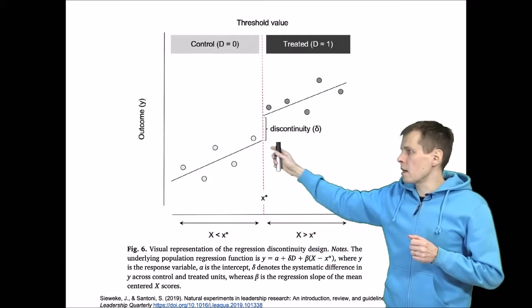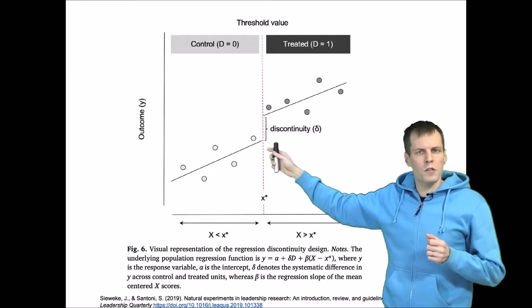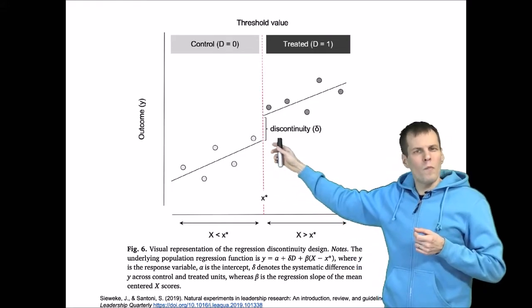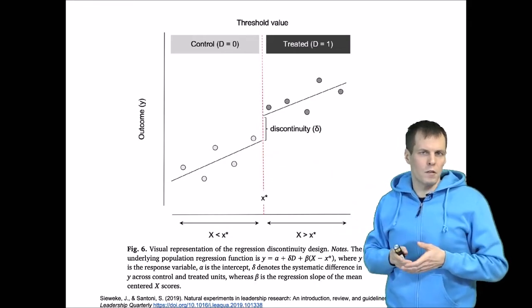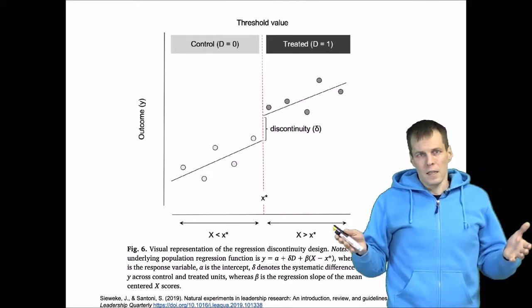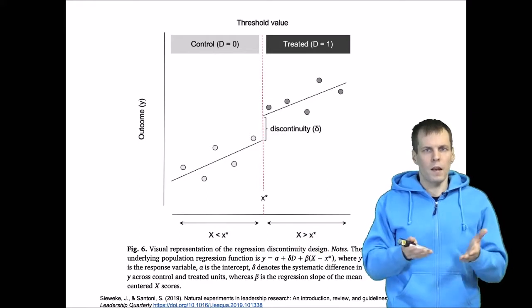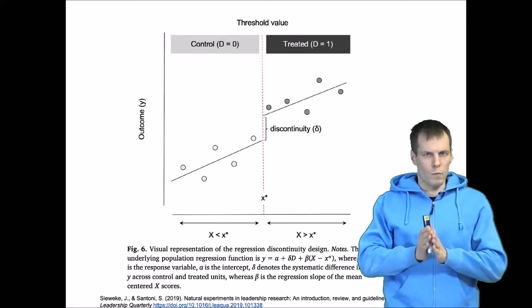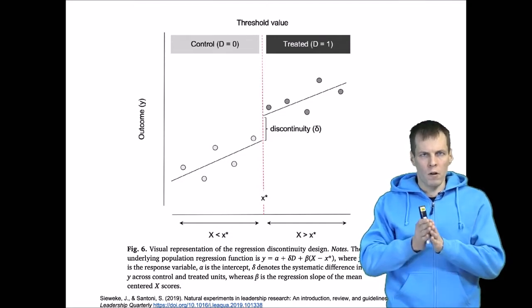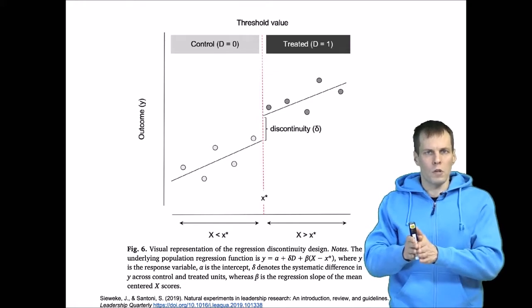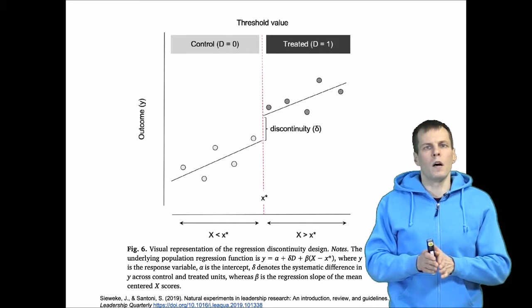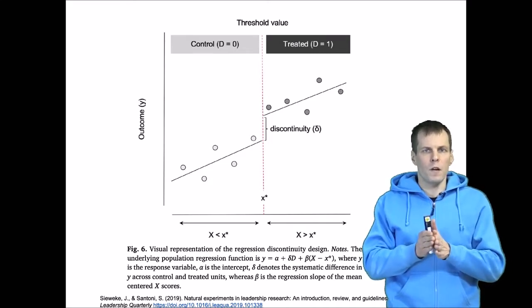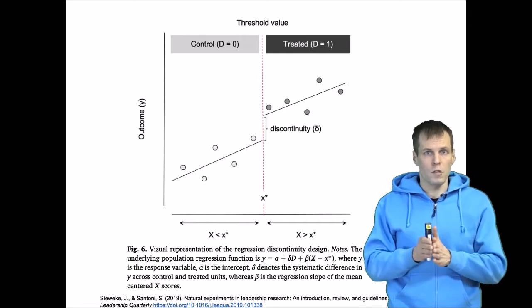The key idea is that around this threshold, the observations that almost made it to the treatment but not quite — the last ones who belong to the control — are nearly identical to those that just got into the treatment. For example, kids who go to school: in Finland, if you were born on December 31st, you go to school with kids born in the same year, but if you were born on January 1st, you go to school with kids born the next year. The difference in age is small, but there is a clear cutoff.